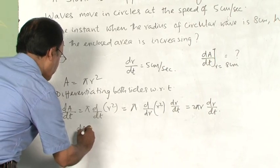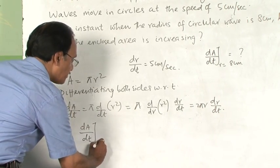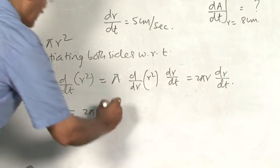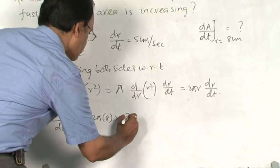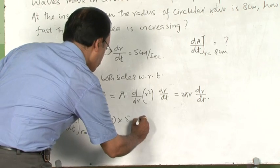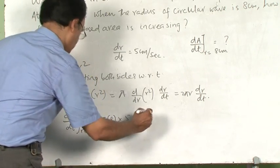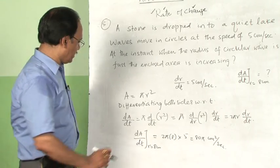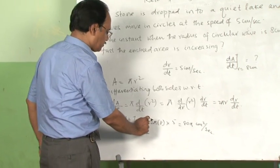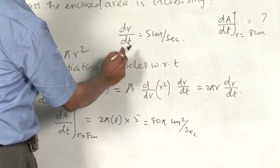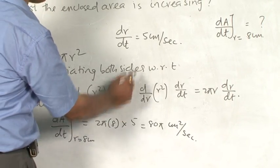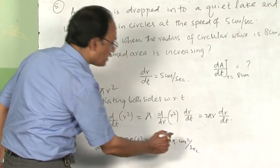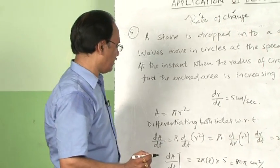You are asked to find dA/dt when r = 8 cm. This is given by 2π × 8 × 5, which equals 80π centimeters squared per second. So the answer is 80π cm²/s.